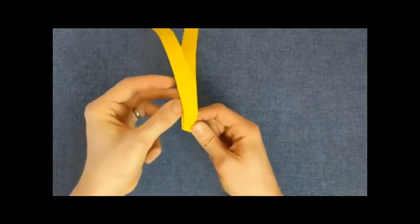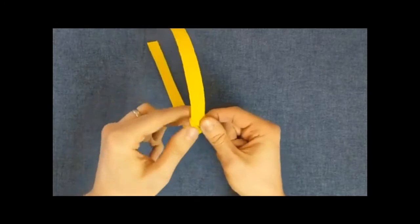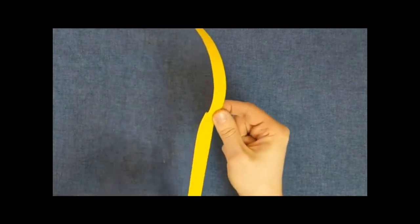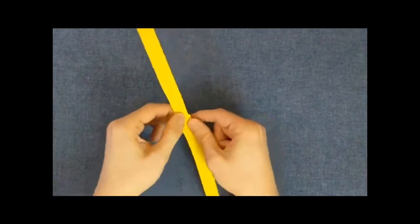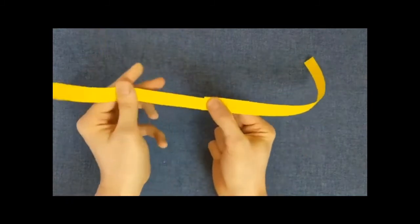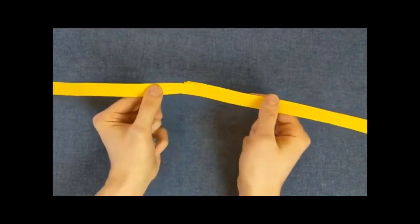Next, take the piece of paper, the strip of paper at the back and fold it underneath. And we've now joined our two bits of paper together.